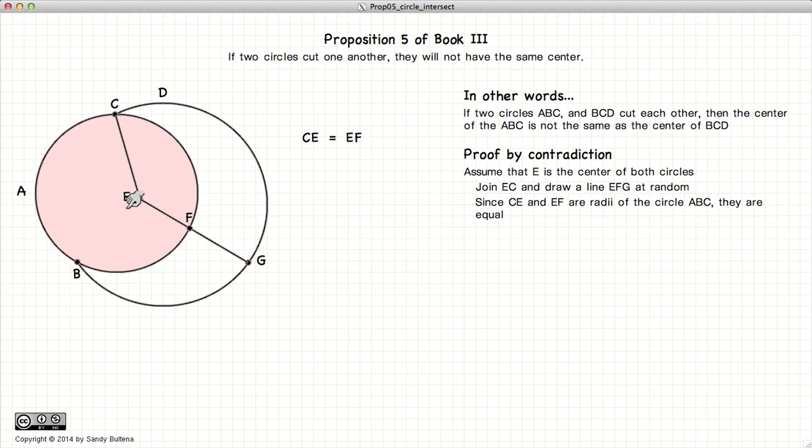Now, since EC and EF are the radii of this circle A, they must be equal, so CE must equal EF.